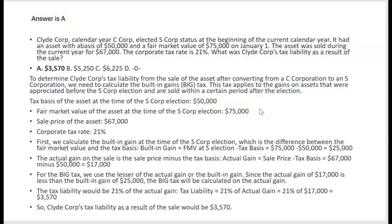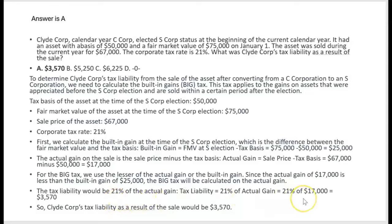You might think: aren't they an S-corp now? S-corps don't pay corporate-level tax — everything passes through to shareholders. Generally yes, but not when a C-corp switches to S-corp status with an appreciated asset from its C-corp days and sells that asset within five years. This triggers the built-in gains tax. The built-in gain is $75,000 − $50,000 = $25,000. The actual gain on the sale is $67,000 − $50,000 = $17,000. For the built-in gains tax we use the lesser of the actual gain ($17,000) or the built-in gain ($25,000), which is $17,000. Tax: 21% × $17,000 = $3,570.